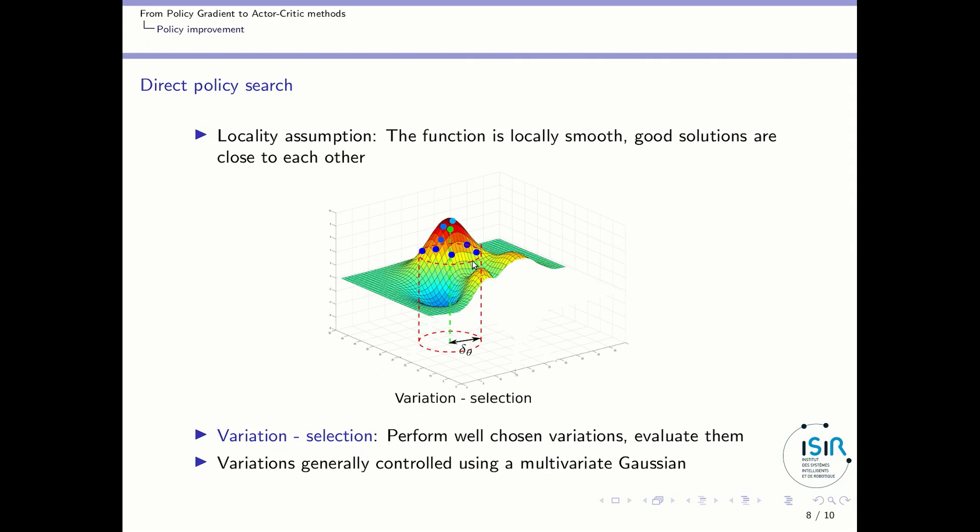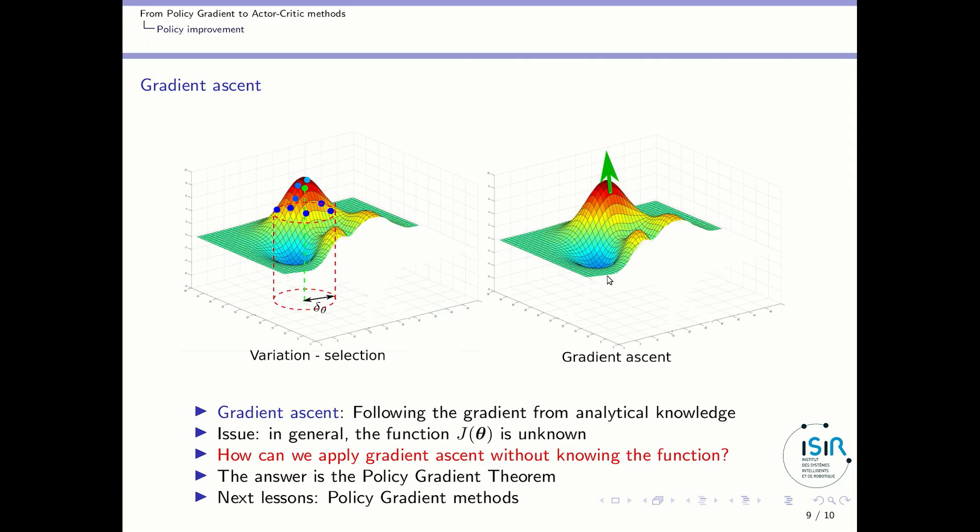So more standard direct policy search algorithms use a locality assumption. They consider that the function J(θ) is locally smooth which means that good solutions are close to each other. So if you found a good solution probably a good idea is to look around this good solution. So these algorithms can be generalized under a general form which is variation selection. So you get your best solution so far, you perform a few variations around this solution and you will select the best one and do it again and again. And generally variations are controlled using a multivariate Gaussian because that's a nice way to have a high probability to draw something which is very close to what you got before and eventually to draw something which is further away but with a lower probability.